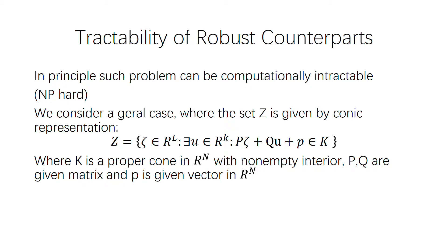In the above discussion we talked about the tractability of the robust counterparts. Tractability precisely means whether we can solve this problem in polynomial time with convex complexity. If it cannot be solved efficiently, or if it is NP-hard, it is not computationally tractable. If we do not constrain the uncertainty set, this problem can be computationally intractable.